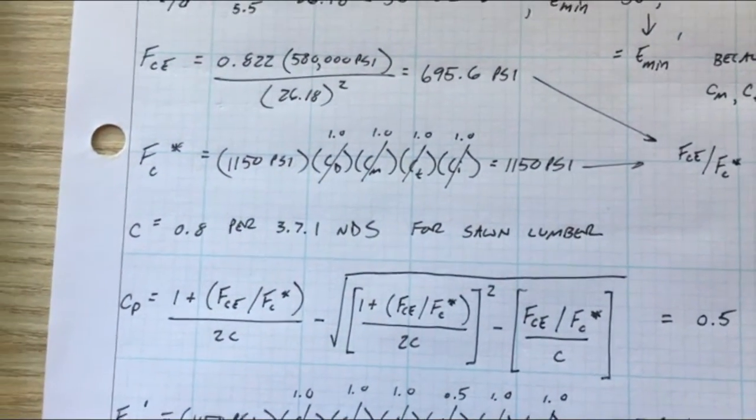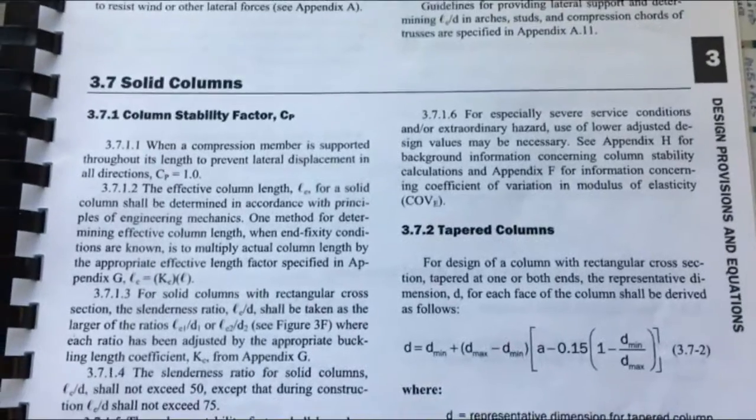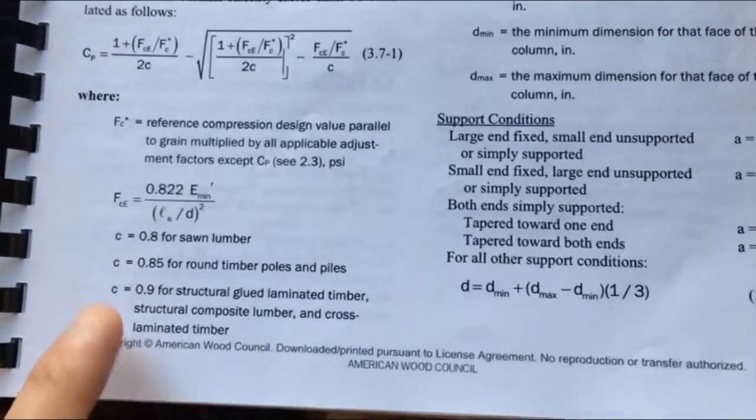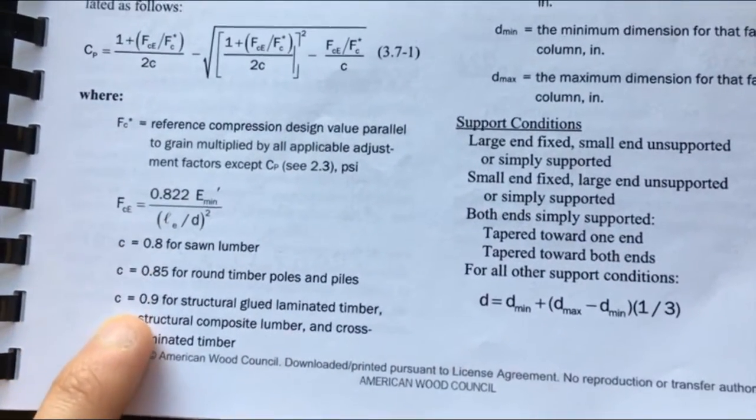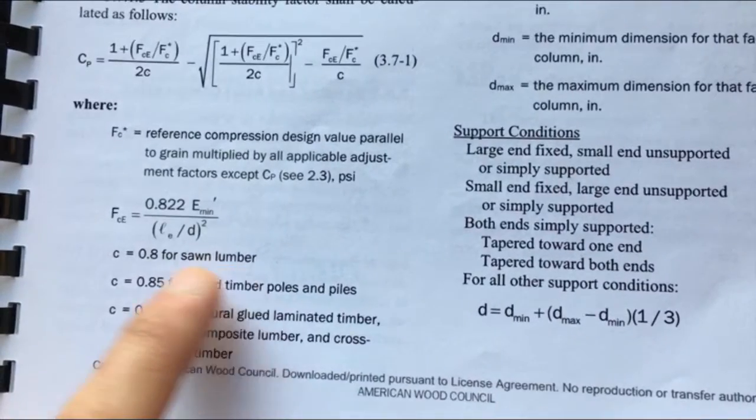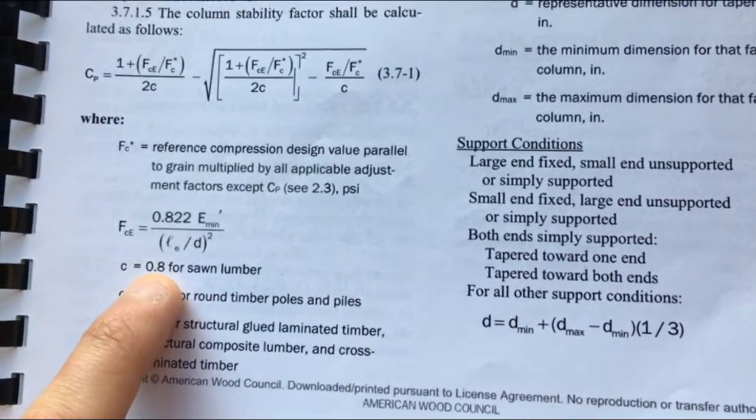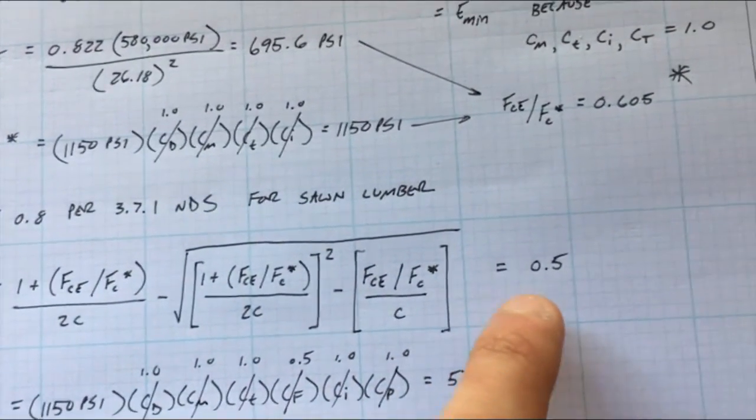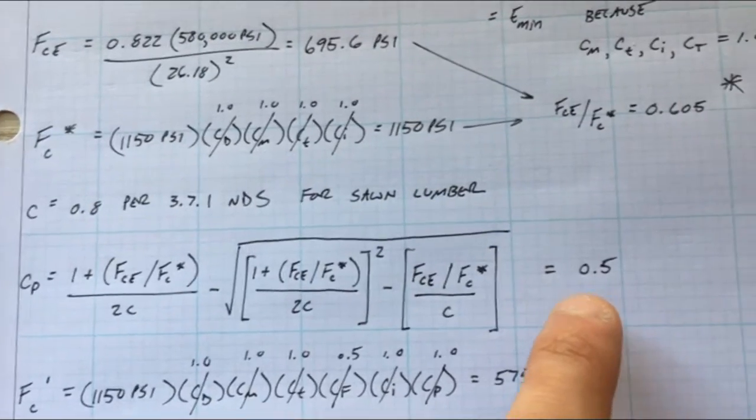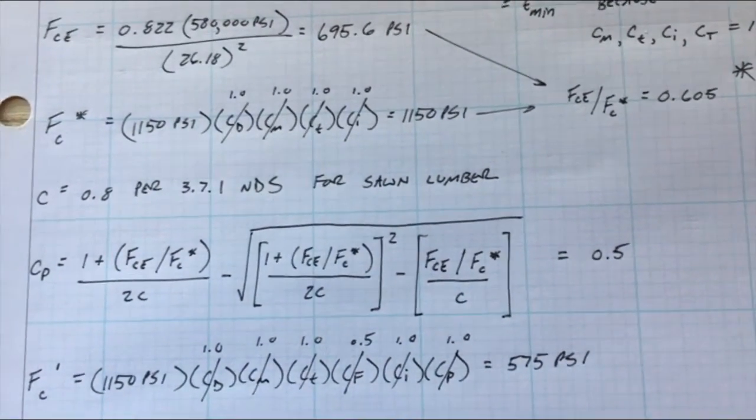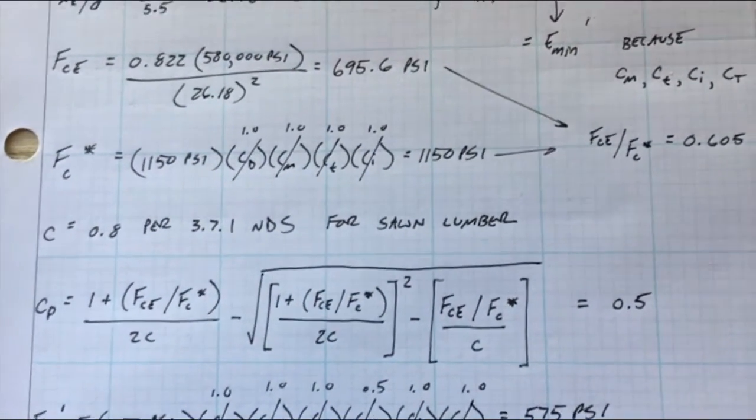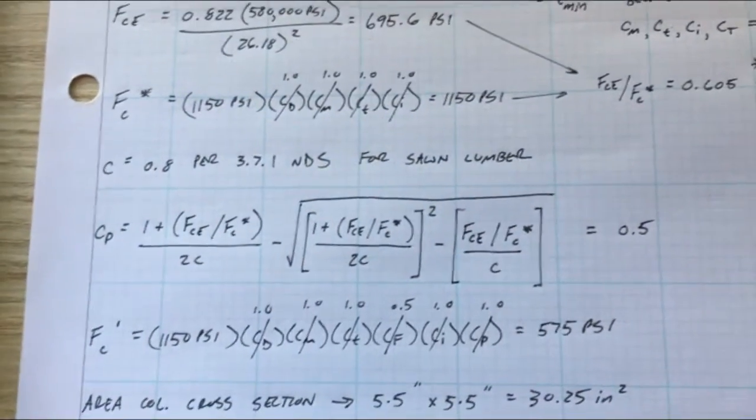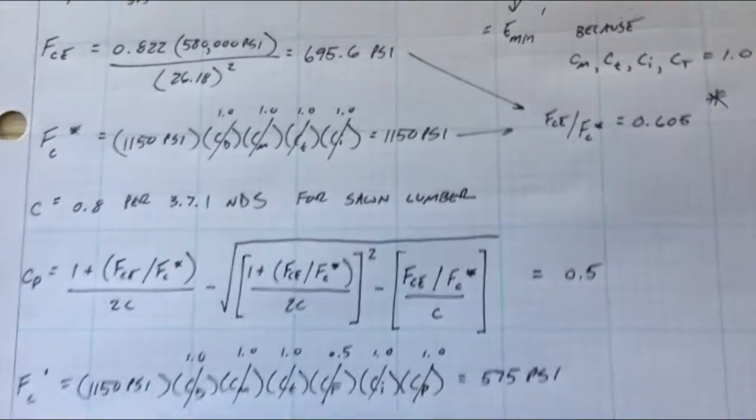So now you have CP and the last thing we need is c. Well c is designated per, like I said, back in chapter 3.7. It says right here, gives you all your different c values. We are using sawn lumber so c is just 0.8 for us. Now we have everything, plug everything into the big equation, that actually dumps you out of a CP factor of 0.5. So it halves your capacity that you're allowed to use for that column strength, so it's pretty brutal.